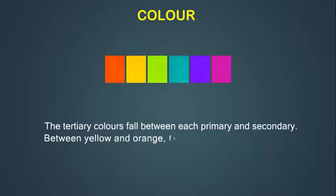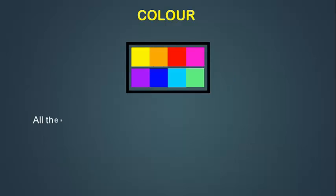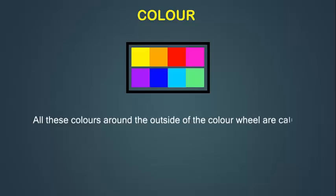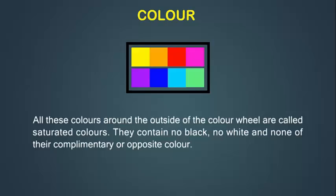Between yellow and orange, for example, is yellow-orange; between blue and violet is blue-violet, and so on. All colors around the outside of the color wheel are called saturated colors. They contain no black, no white and none of their complementary or opposite color.